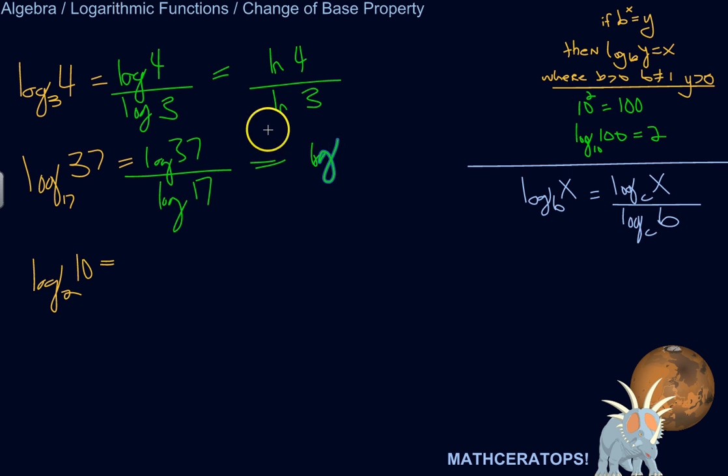You could say, if for some reason it makes your problem slicker, to say log base 5 of 37 over log base 5 of 17, go for it.